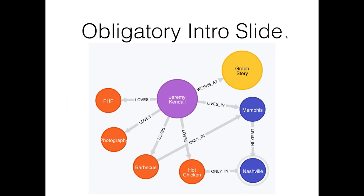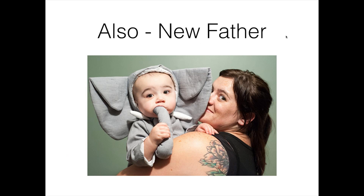Since we're talking graph databases, I figured we would do a data visualization of my obligatory intro slide. The big yellow node there — I work at Graph Story. Going down the right-hand side, I currently live in Memphis, Tennessee, formerly of Nashville. On the other side with the orange nodes are the things that I love: PHP, photography, and barbecue. And if you see the other relationship coming off of barbecue, this data visualization confirms that Memphis, Tennessee is the only place to get barbecue, and Nashville, Tennessee is the only place to get hot chicken. I really, really love my food. Also, I'm a brand new father, so here's the obligatory photo of my son in his Halloween costume being held by my beautiful wife.